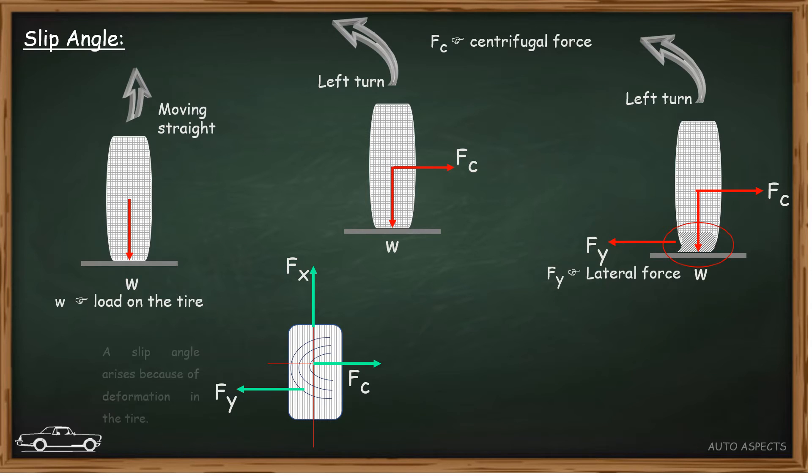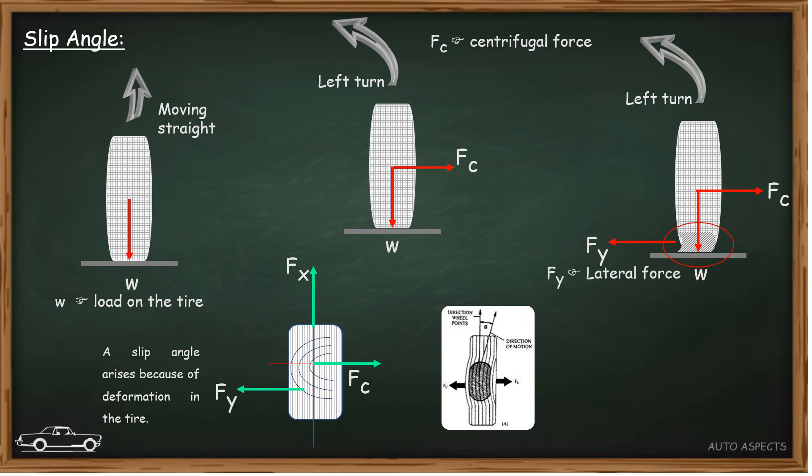Here the treads at the contact patch are normal when it travels on a straight path. During cornering or in a left turn, the treads have an impact on their direction. This is mainly due to the impact of longitudinal force and lateral force acting on the tire.